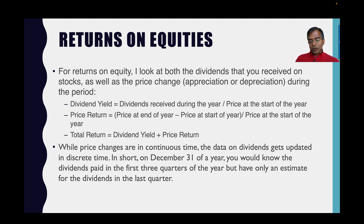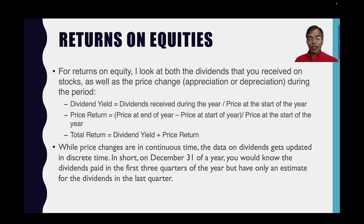A bit more about returns. On returns on equity, both for large cap and small cap, I look at both dividends and price appreciation. For the dividends, I take the dividends paid over the course of the year and divide by the price at the start of the year. For example, if the index level was $4,500 at the start of the year and I got $450 in dividends, I take $450 divided by $4,500 — that's my dividend yield. I use the start-of-year price because I would have bought the stocks then. For the price return, I look at the price at the end of the year minus the price at the start, divided by the start price. My total return each year is the dividend yield plus the price return.